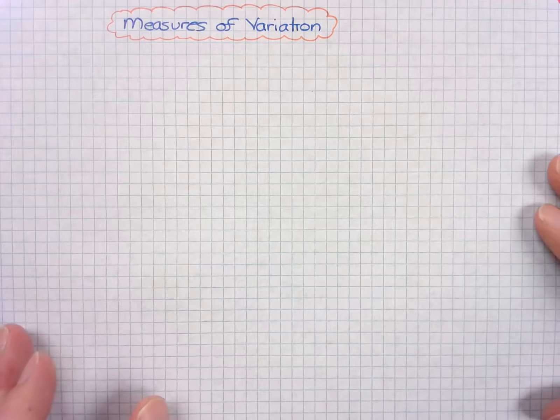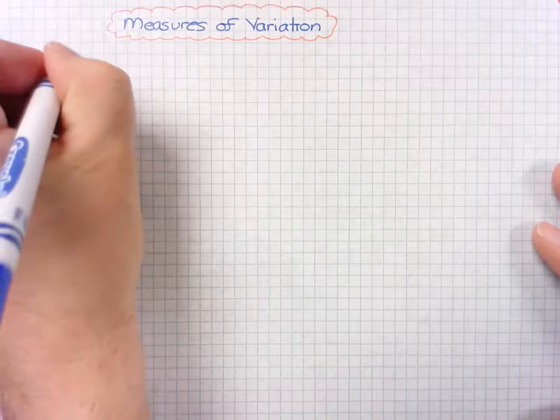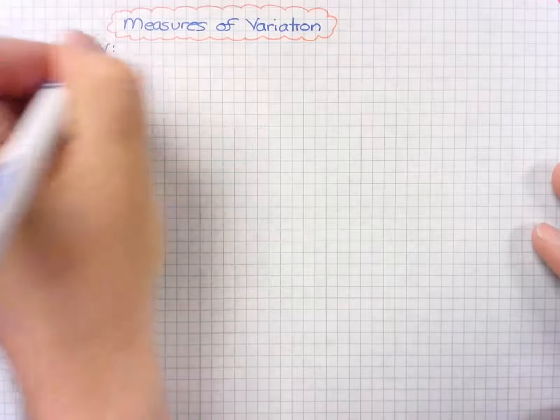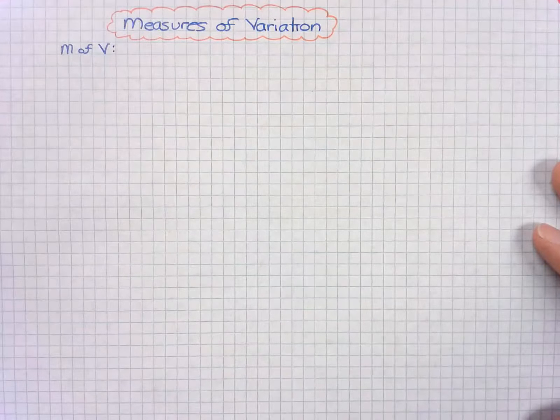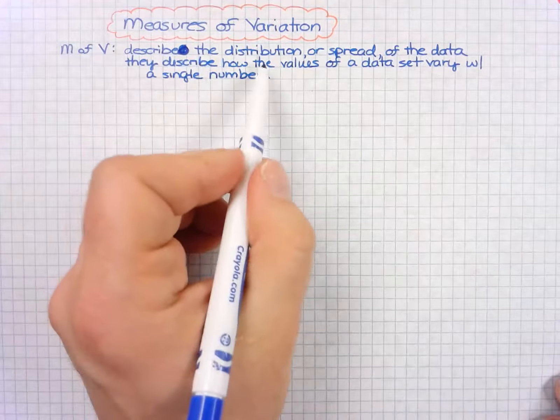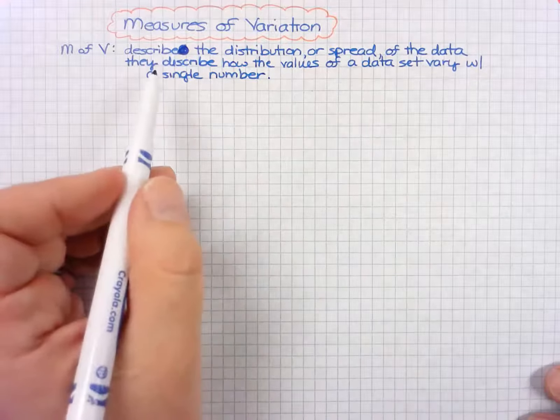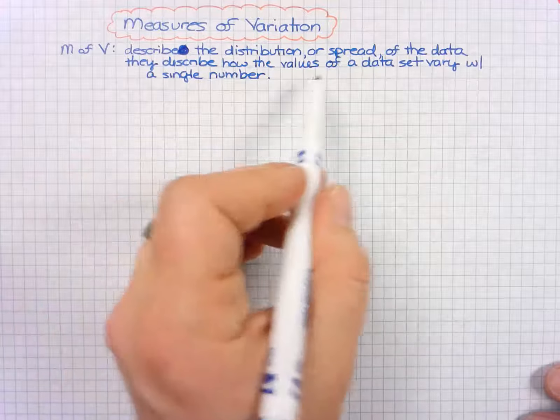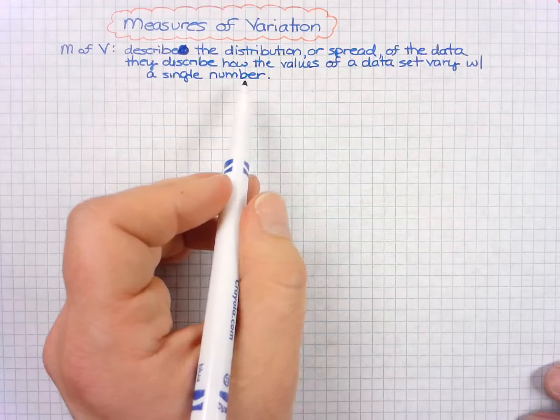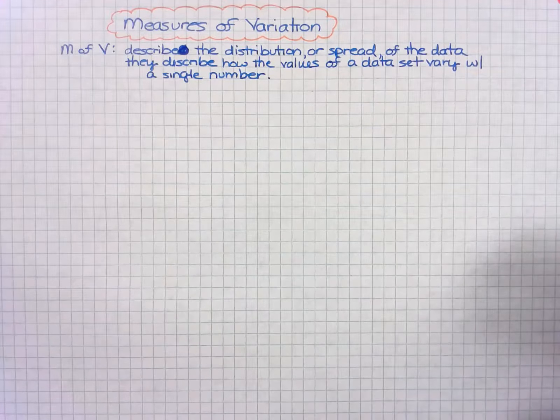Measures of variation: let's provide a definition for measures of variation. So they describe the distribution or spread of the data. They describe how the values of the data set vary with a single number.